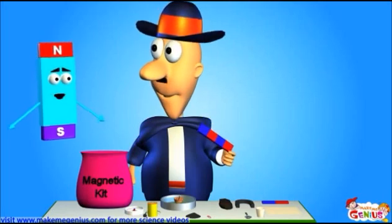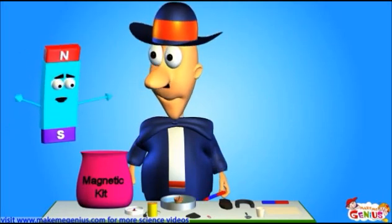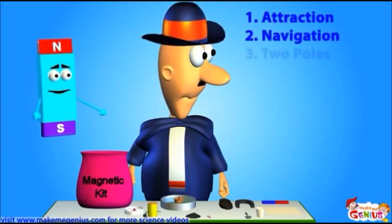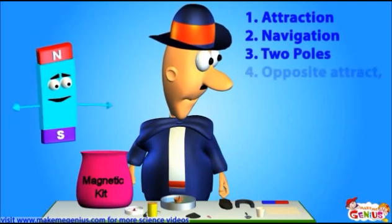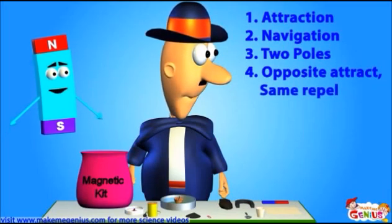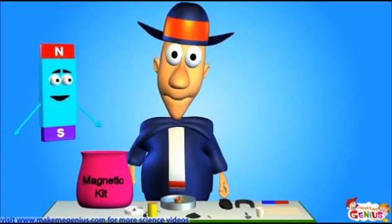So now you know all the four features of a magnet. Let's go over them again. One, magnets attract. Two, magnets help in navigation. Three, every magnet has two poles. And four, opposite poles attract, and the same poles repel. So now you've learned about the four properties of magnets.